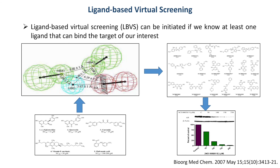Coming to the next virtual screening approach, which is ligand-based virtual screening. For performing ligand-based virtual screening, we need at least one ligand that can bind to the target of interest. If you have a set of ligands, we can generate a pharmacophore model and use this model to screen chemical databases to identify hit compounds. For example, in one study, authors took 5 natural compounds that bind to androgen receptor downregulating agents and generated a pharmacophore model. This model was then used to screen against the Maybridge database containing approximately 60,000 compounds and the NCI database containing more than 200,000 compounds, resulting in identification of 5 novel compounds that showed inhibition values in the micromolar range.